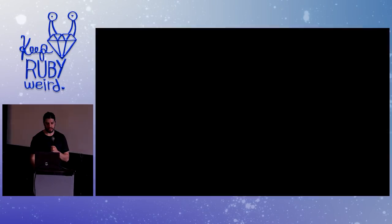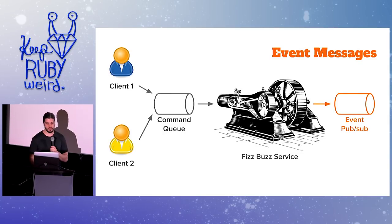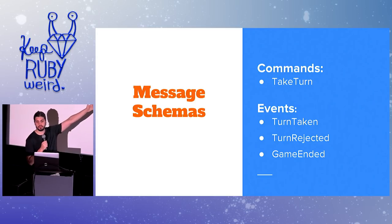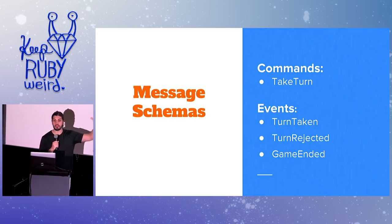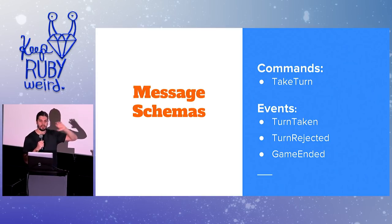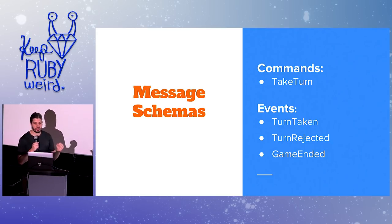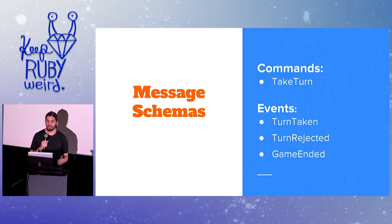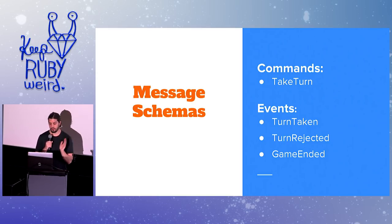Here are our schemas. We have take turn — it's a command message. You can start a new FizzBuzz game by taking the first turn. If your turn is accepted by the game — in other words it's correct — the service will publish turn taken for all the world to see. If your answer is wrong, the service will publish turn rejected. And there's exit criteria for the game: either the counter reaches 100 successfully, or somebody gets it wrong and the game ends abruptly.